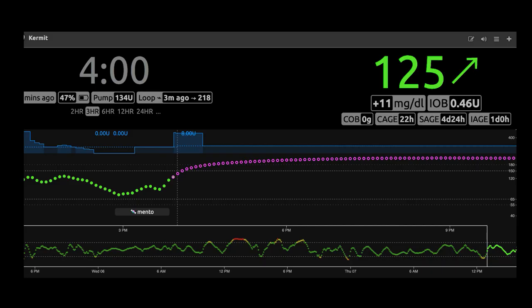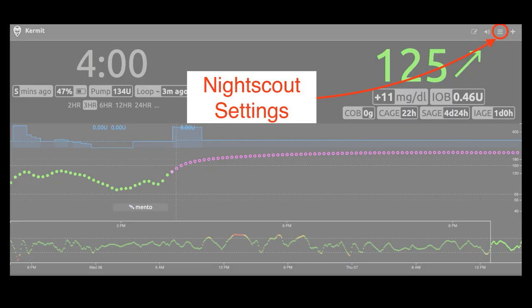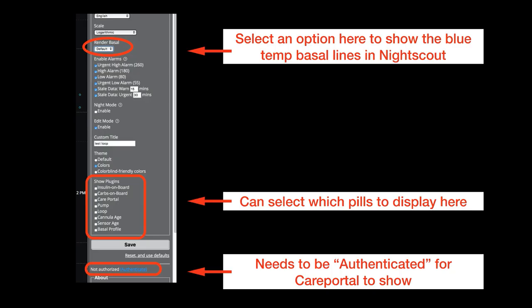Let's start off by getting acclimated to some of the main icons you're going to see in Nightscout. The three horizontal lines in your site's upper right corner are your Nightscout settings, where you can customize some important things. The first one for loopers is that you're going to want to select a render basal option — there's default and icicle, and we'll talk about those a little bit later. You also want to check the boxes for the plugins that you're going to want to show pills for. Finally, the last part is an authentication — it's like a password for your site, and you're going to need to authenticate your site for your Care Portal icon to show.